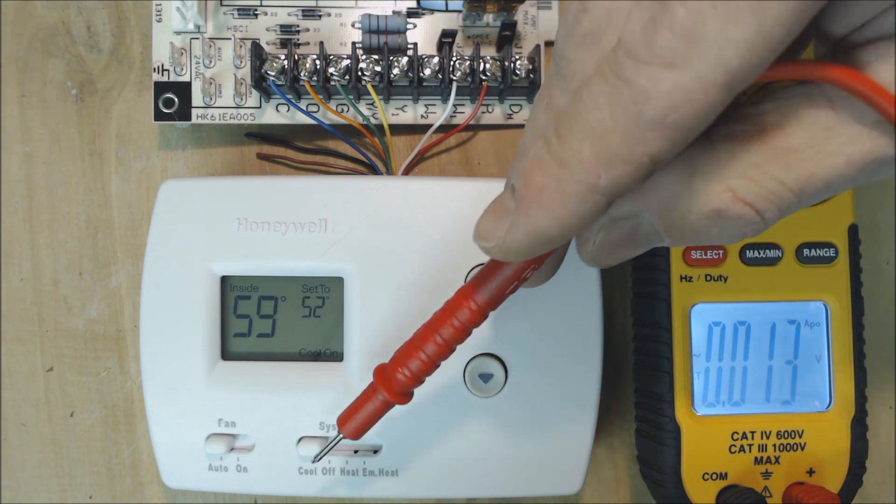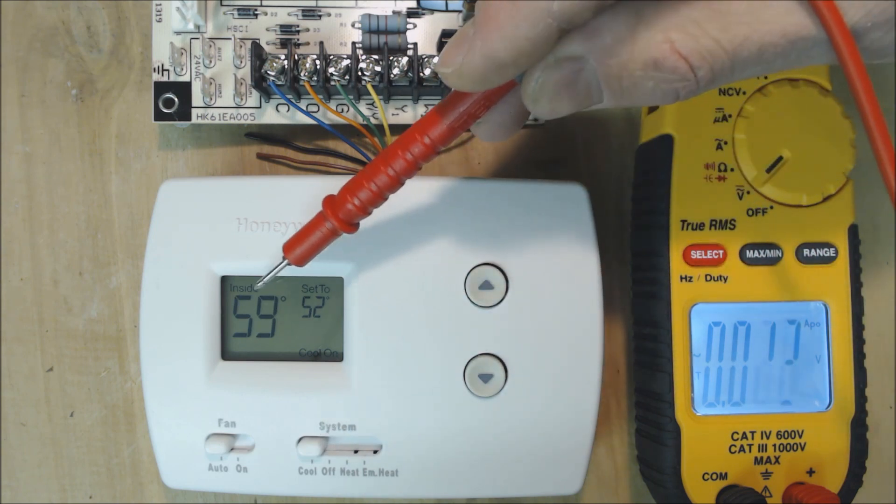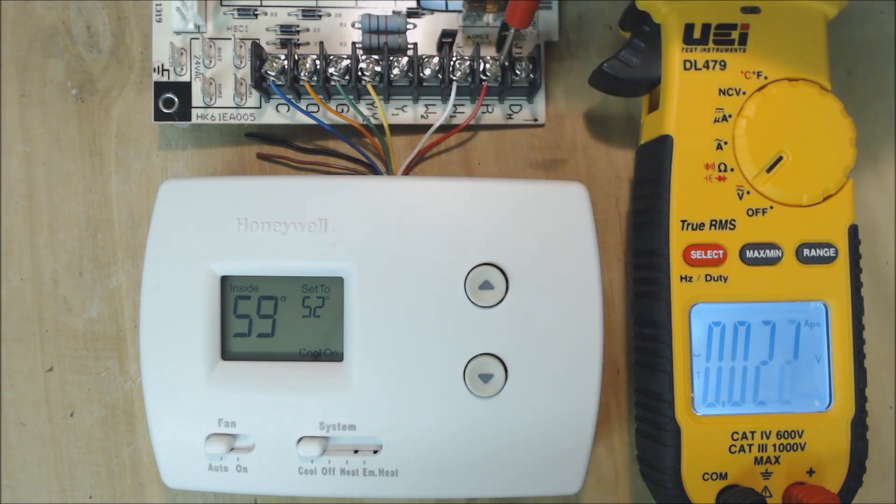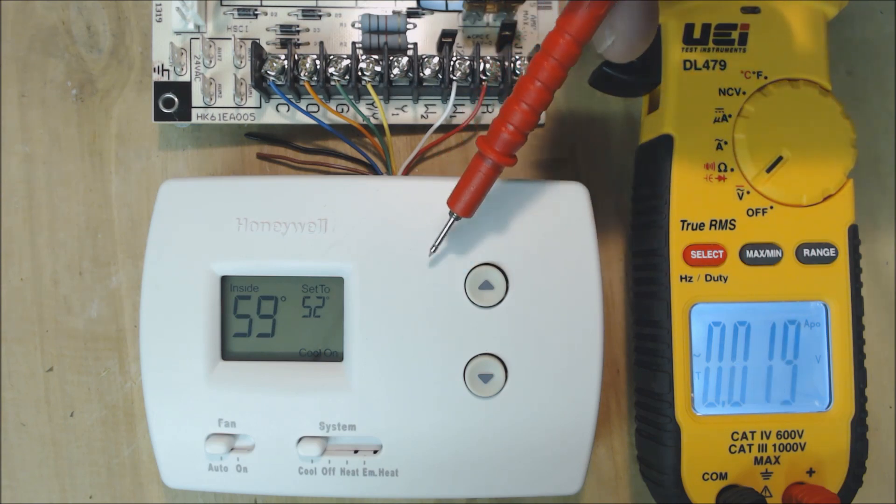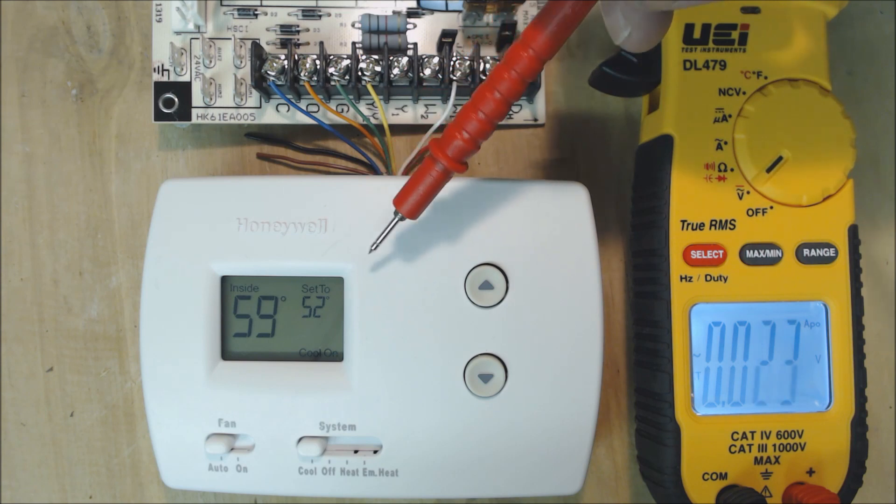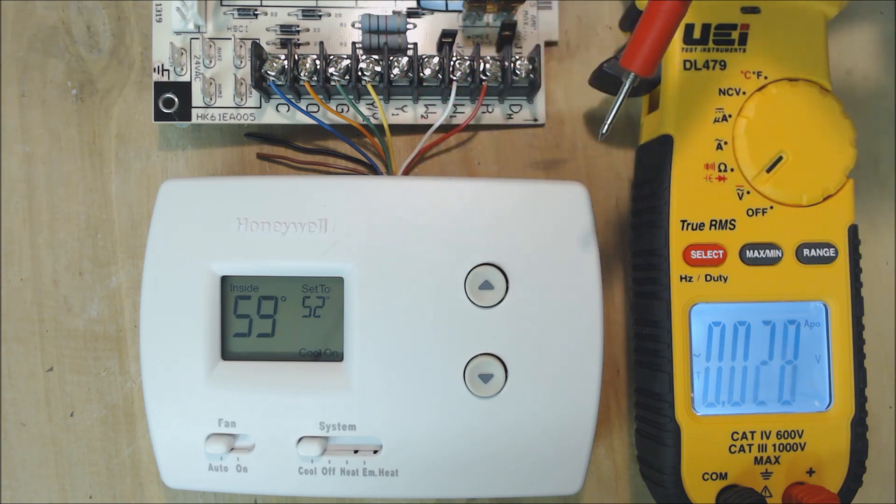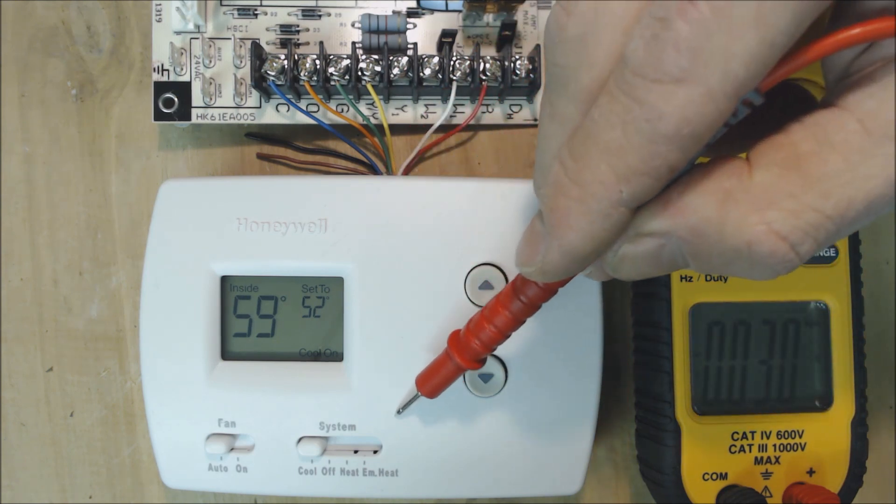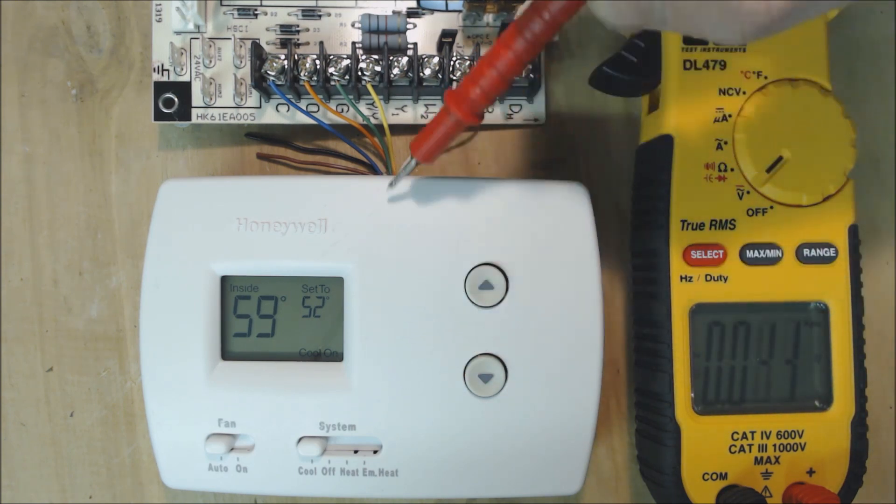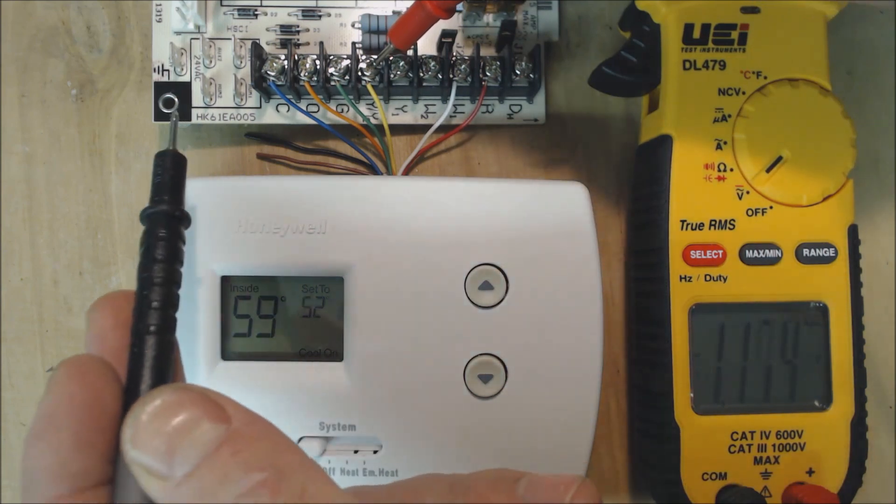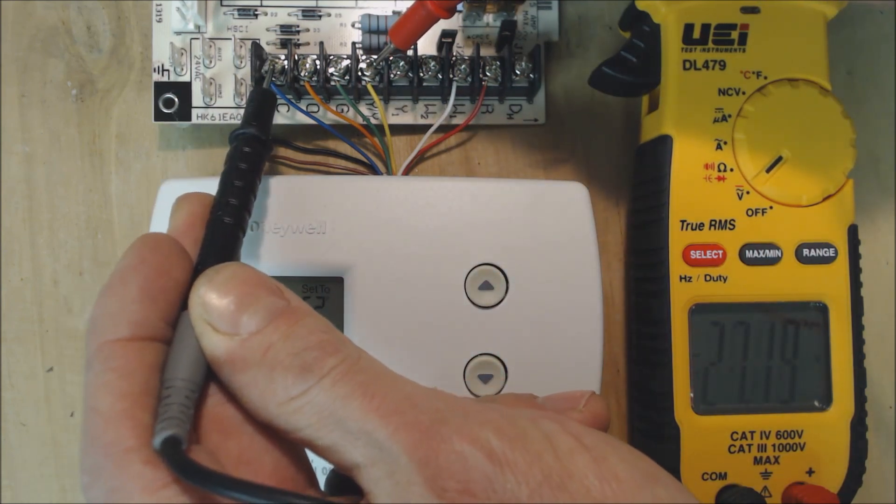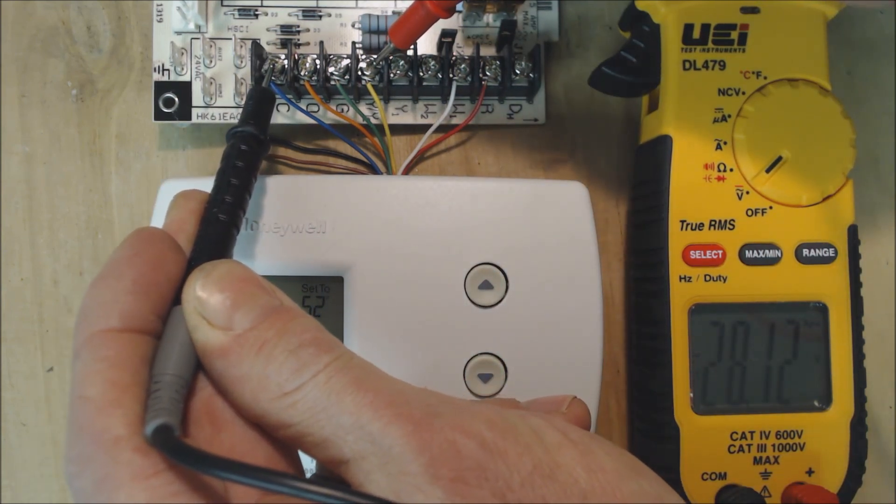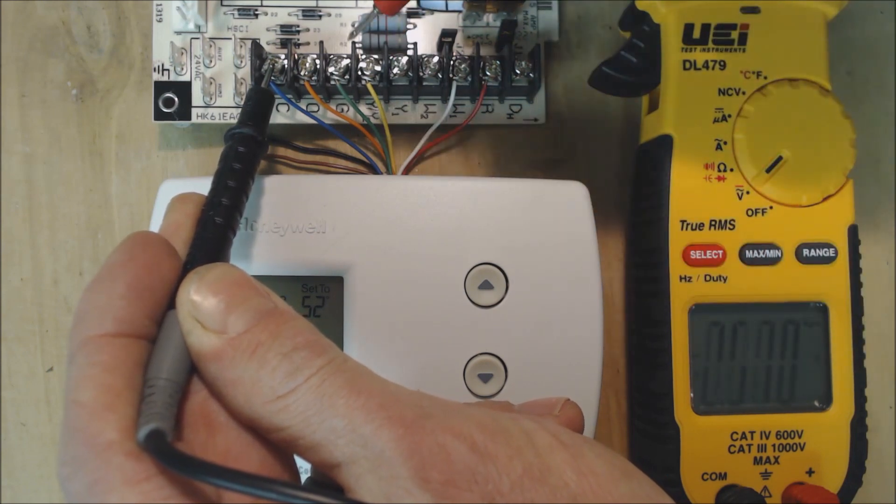R comes into the thermostat, and since we're on cooling with the temperature lower than what it is in the room, you're going to see what we're next powering. We're actually connecting inside the thermostat. R is connecting to O, R is connecting to G, and R is connecting to Y. We're always going to refer to this as 24 volts even though it's 28 volts.